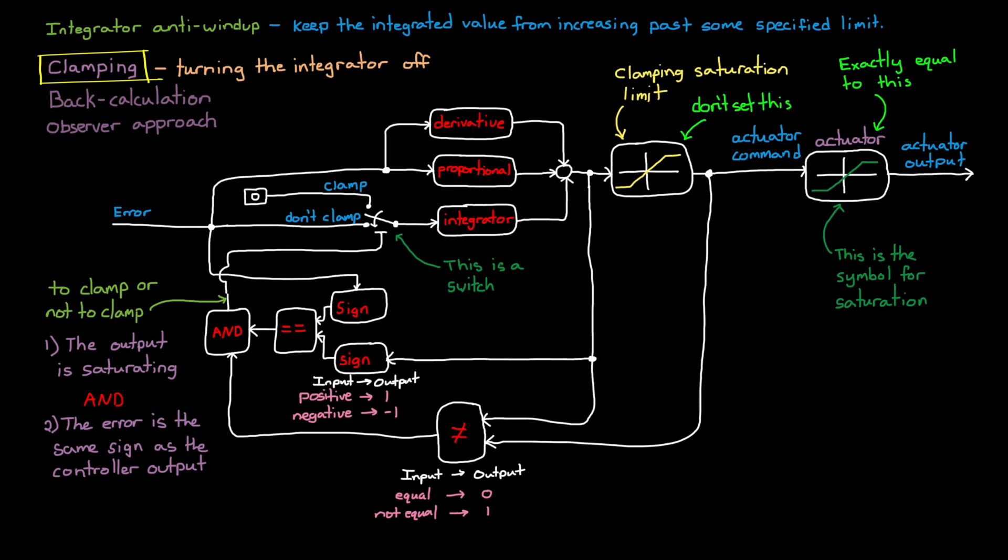How much lower? Well, that depends on how well you know your system and how much you trust your modeling of it. But overall, clamping is a relatively lightweight anti-windup method that can improve performance of your PID controller when it's controlling a system that is operating outside of its linear region, or when it's saturated.